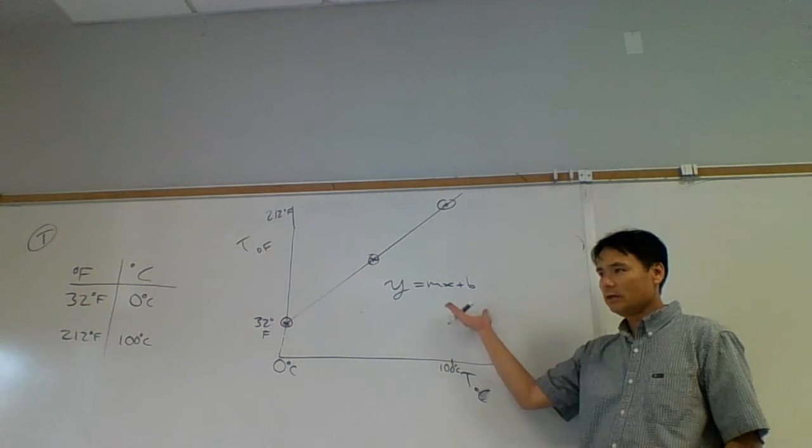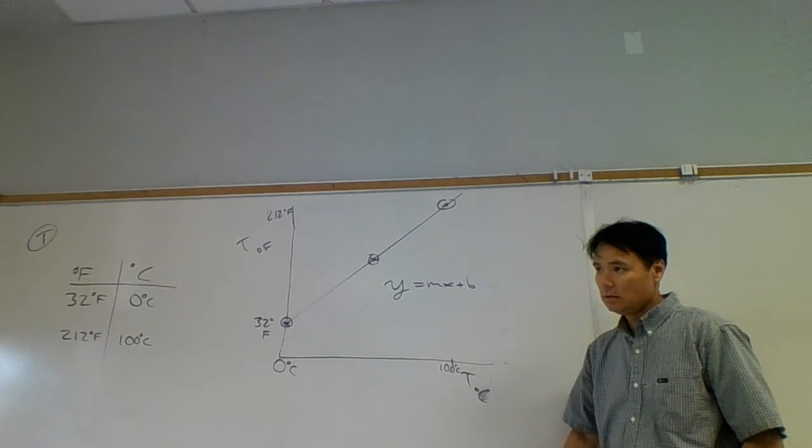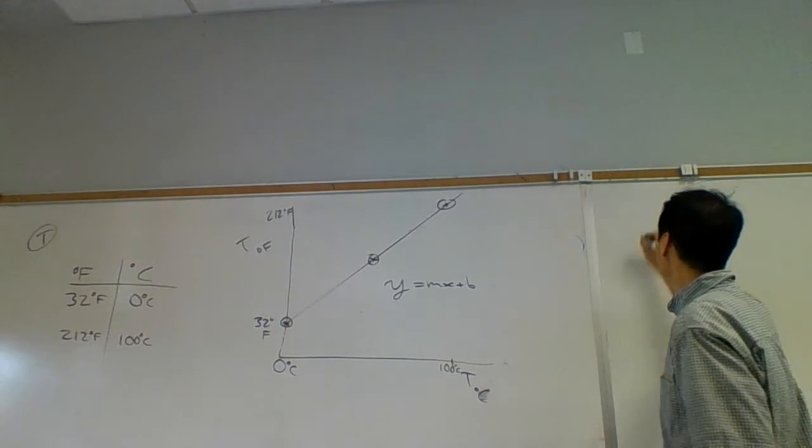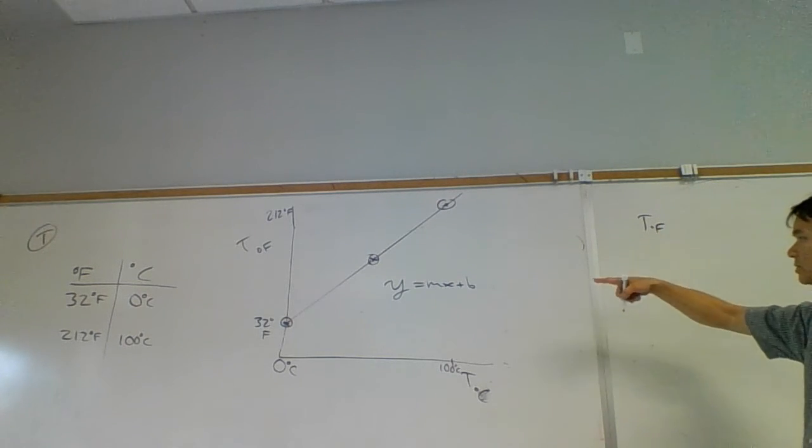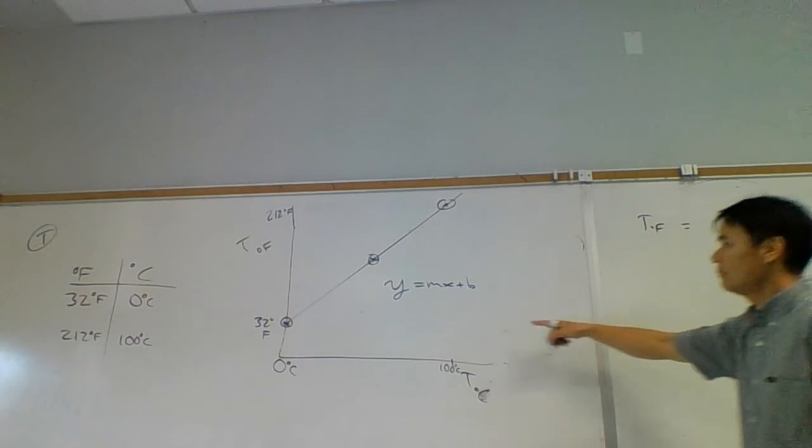Is this equation coming from theory or from observation? Observation. Observation. So this is called an empirical equation. Temperature in degrees Fahrenheit, which is my y, is equal to m. What's my slope?